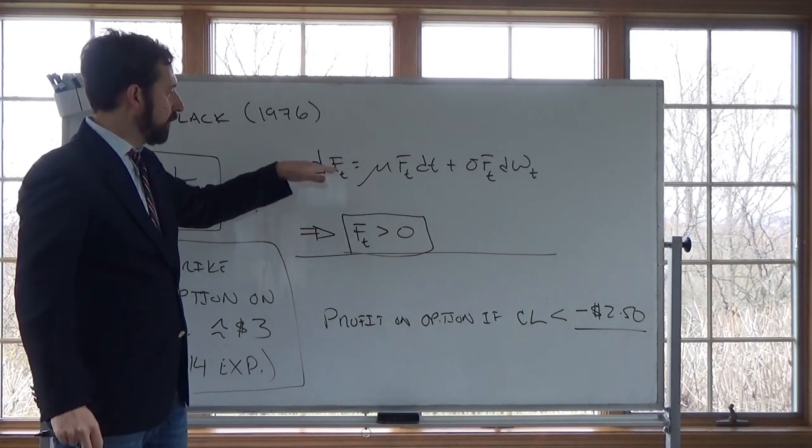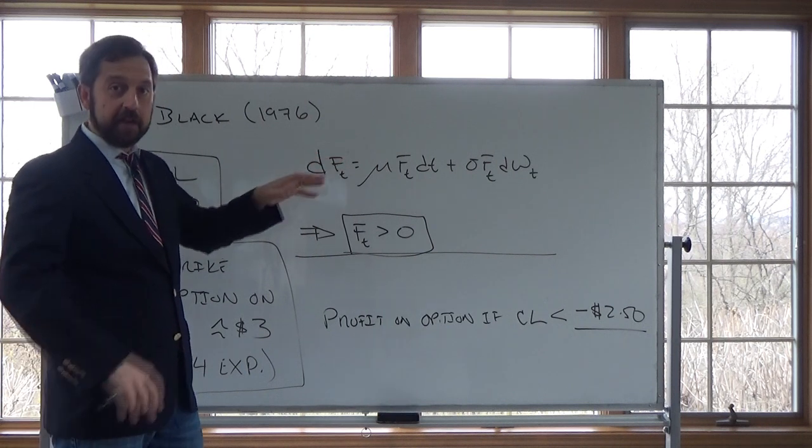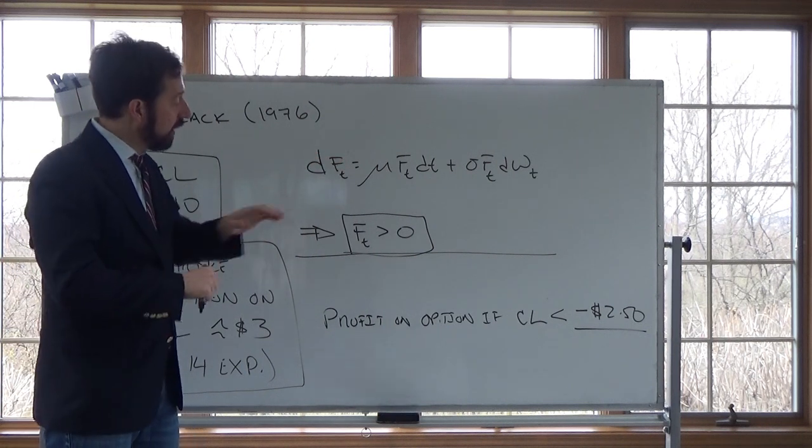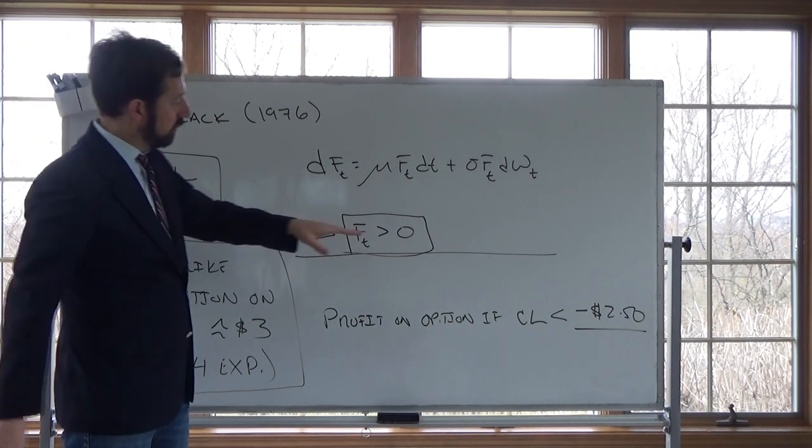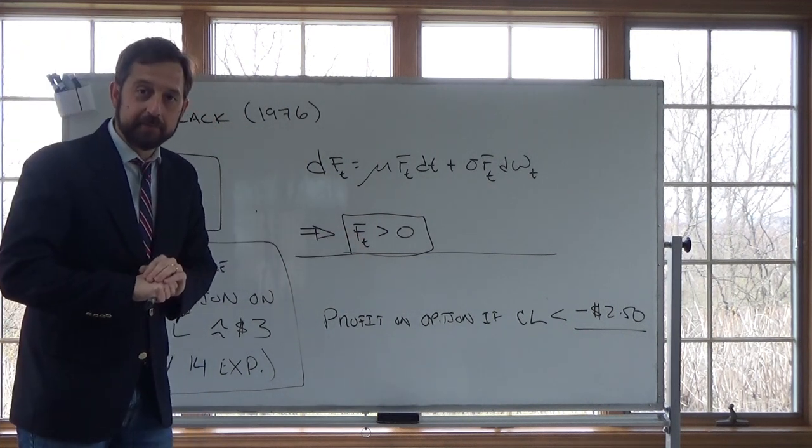So this assumes that futures prices are log-normally distributed. And if futures prices are log-normally distributed, the model assumes, Black's 1976 option pricing model assumes, that future prices cannot be negative, right?